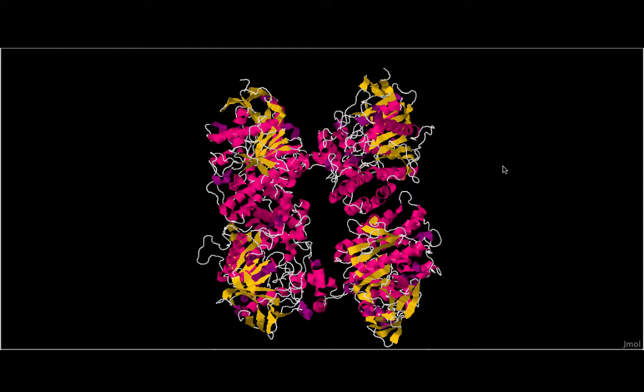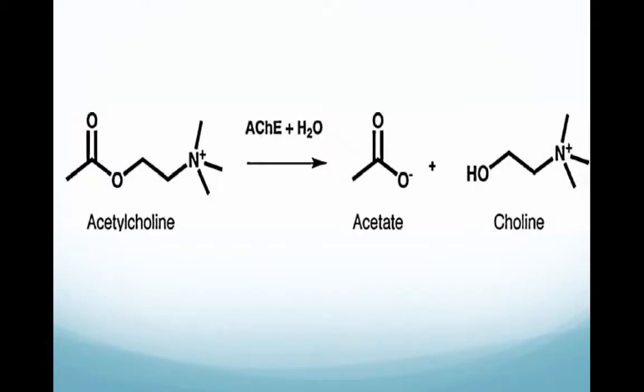Acetylcholinesterase degrades acetylcholine into an acetate and a choline molecule, which can then reenter nerve cells and be used to regenerate acetylcholine.